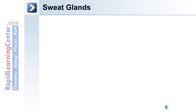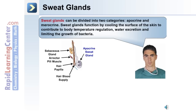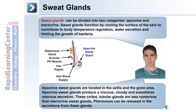The third derivative of the integument we'll discuss are sweat glands. Sweat glands can be divided into two categories: apocrine and merocrine. Sweat glands function by cooling the surface of the skin to contribute to lowering body temperature. They also excrete water and limit the growth of bacteria on the surface of the skin. Apocrine sweat glands are located in the axilla and the groin area. They produce a viscous, cloudy, and sometimes odorous secretion. These coiled, tubular glands are less numerous than merocrine sweat glands. Pheromones can be released in secretions from these glands.